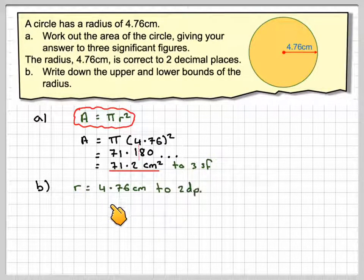Part b: r is equal to 4.76 centimeters to two decimal places, so the radius is equal to 4.76 centimeters, it's correct to two decimal places. Write down the upper and lower bounds of this radius.